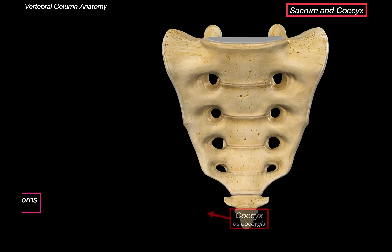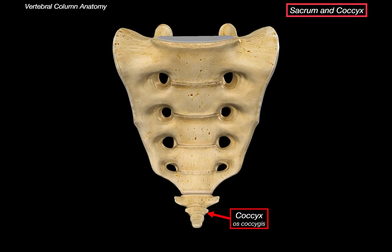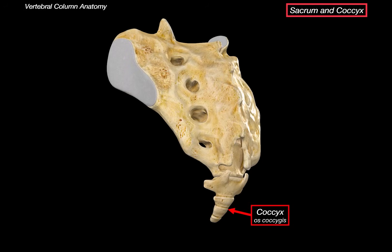Now, coccyx. This small tailbone is the end of the vertebral column. It's highly variable between people, but on average there are four vertebrae here that fused and made this bone. If you turn it around, we can see something called coccygeal cornua, which are horns pointing cranially and a remnant of the articular processes.